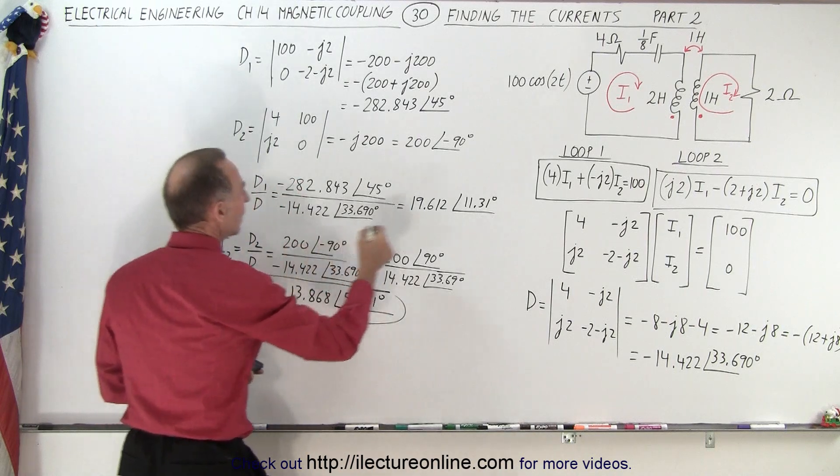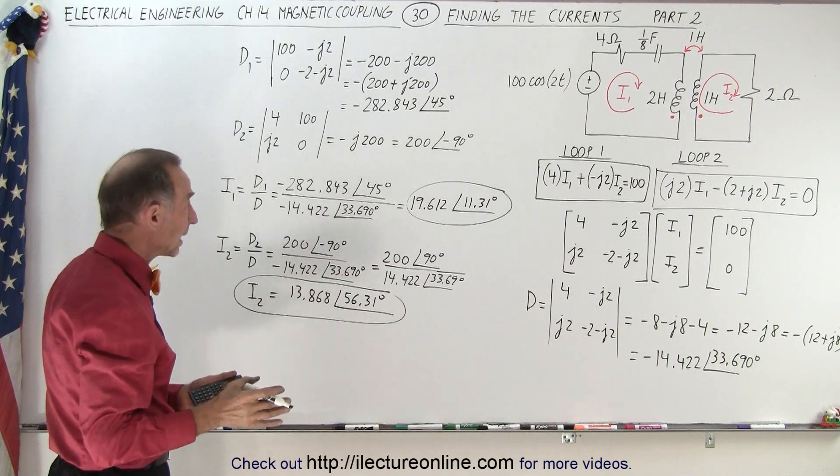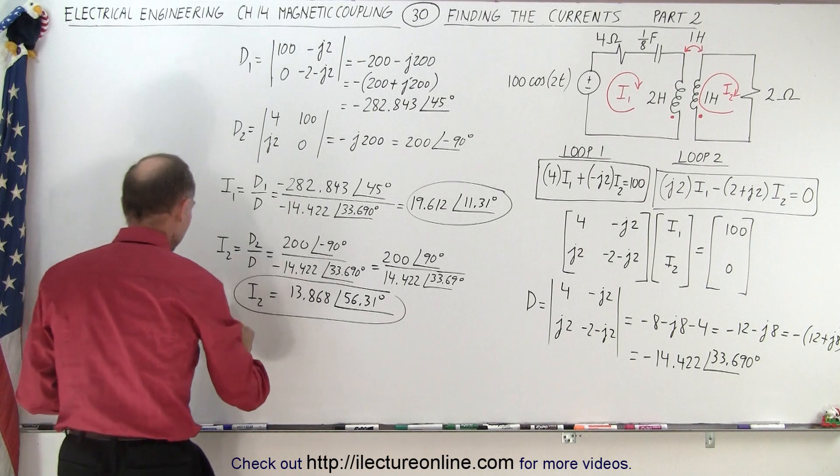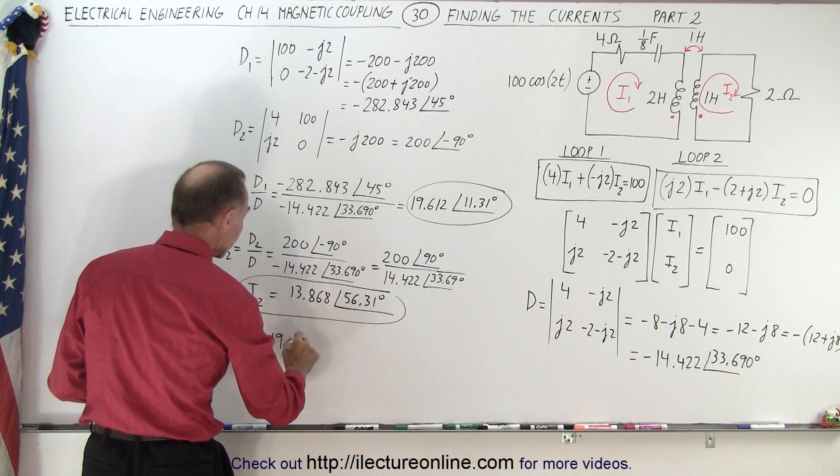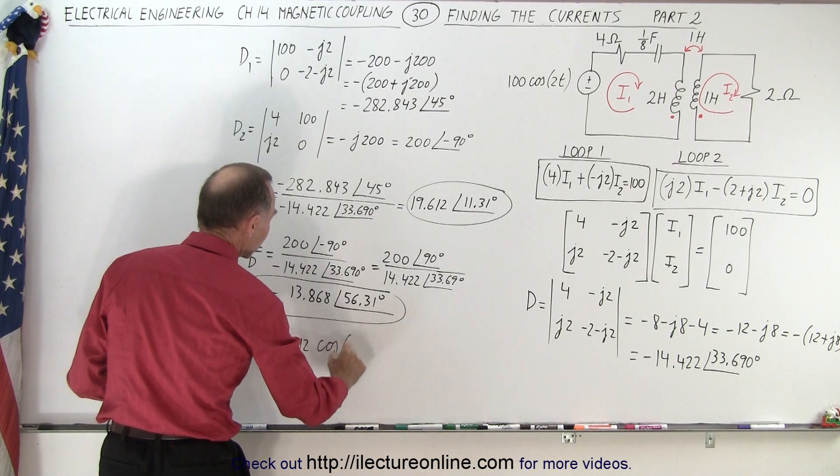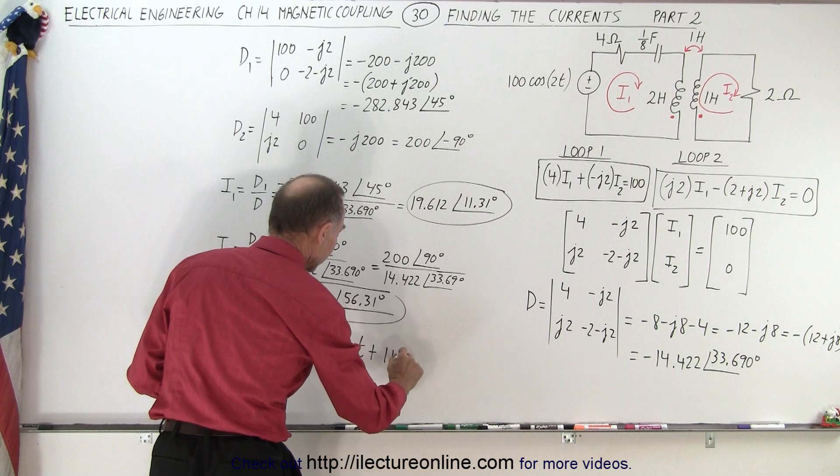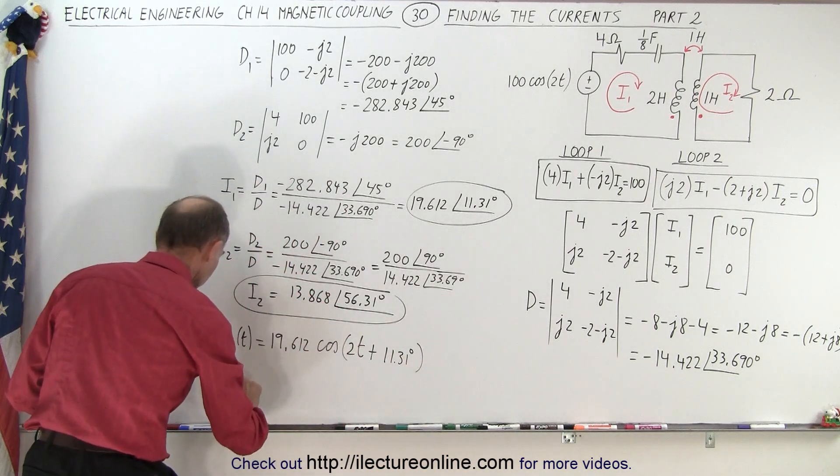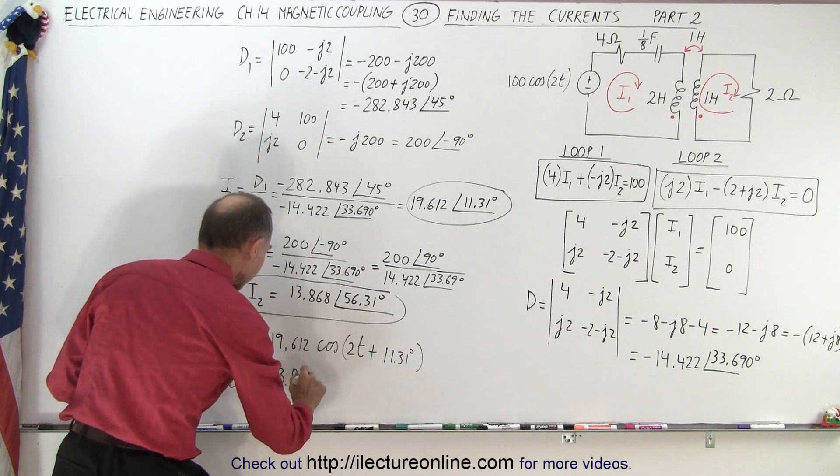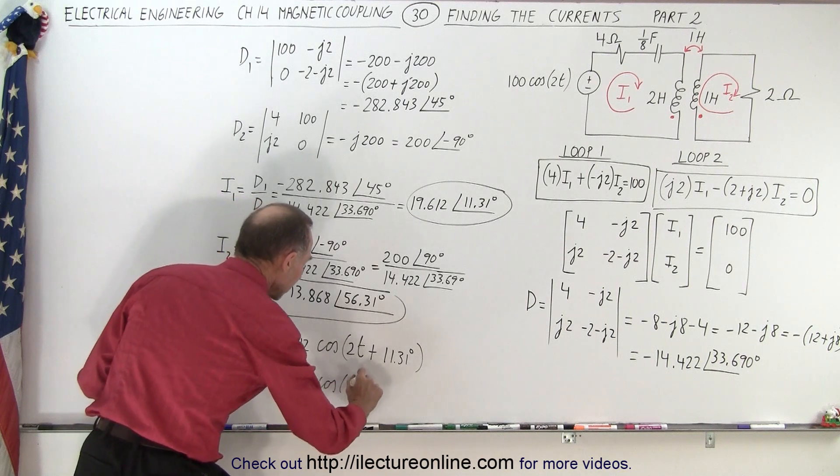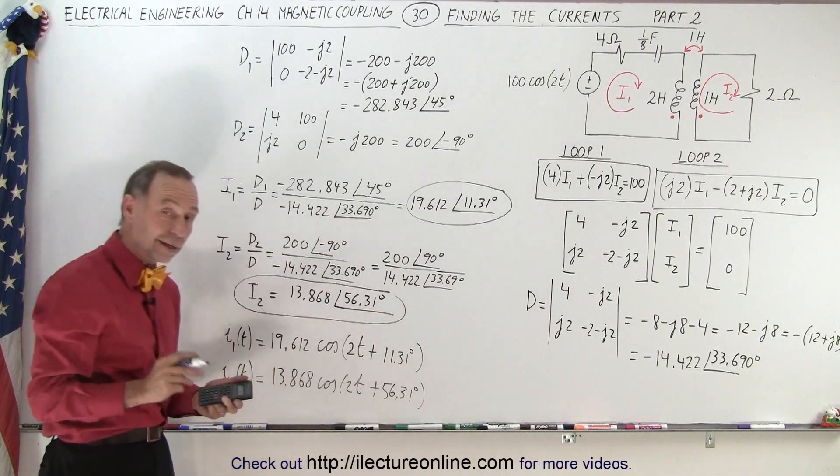So now, if you want to write that into the time domain, you can write that I1 as a function of time is equal to 19.612 times the cosine of 2t plus 11.31 degrees, and I2 as a function of time can be written as 13.868 times the cosine of 2t plus 56.31 degrees. And that is how we find the current.